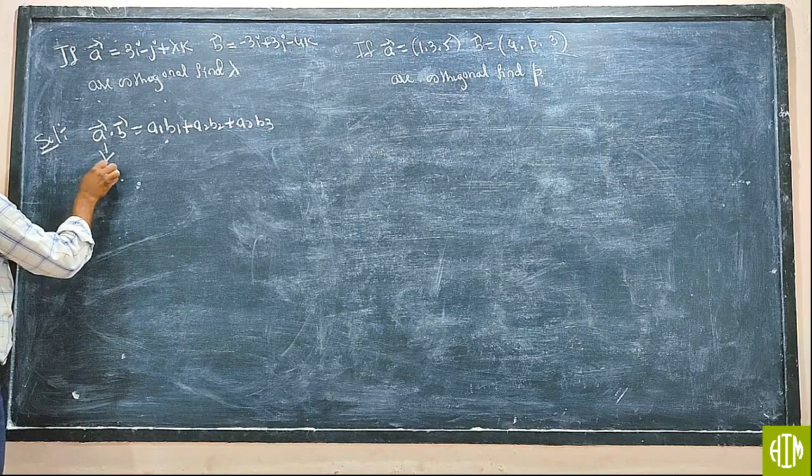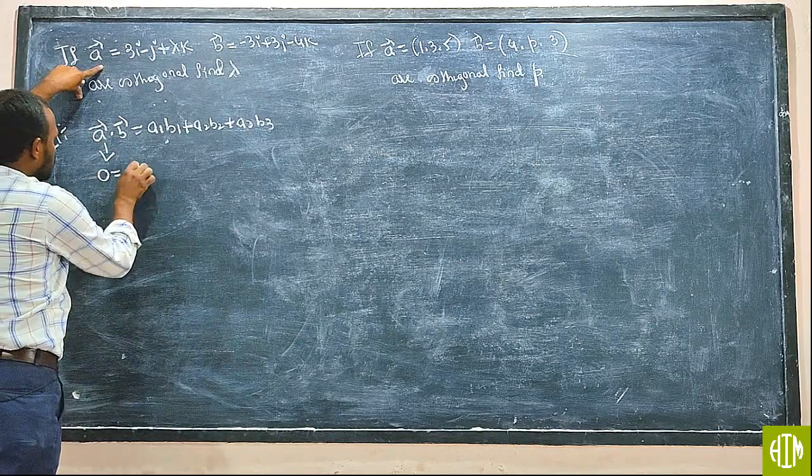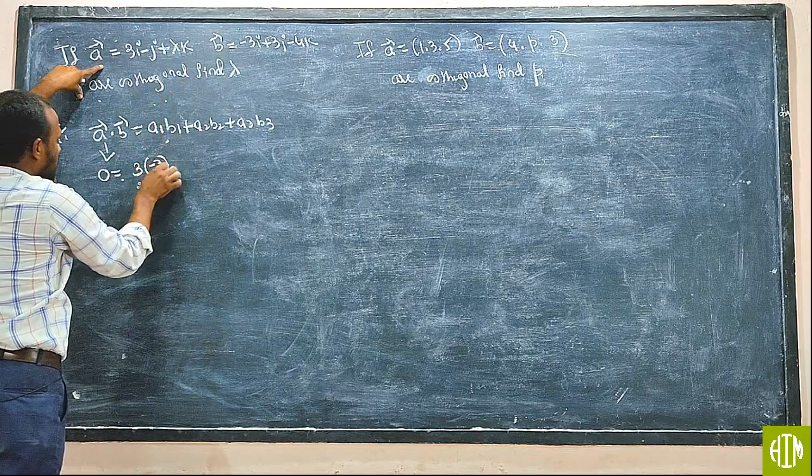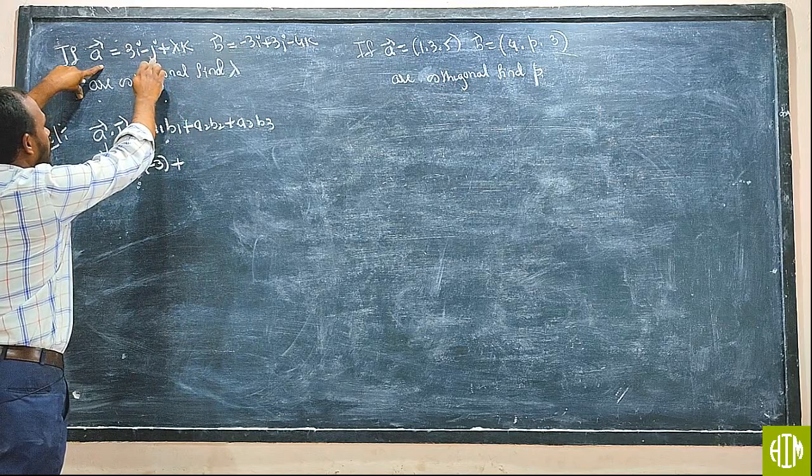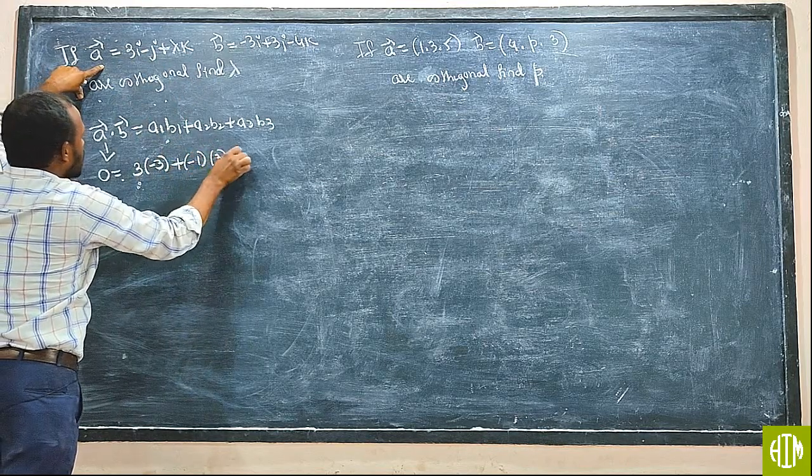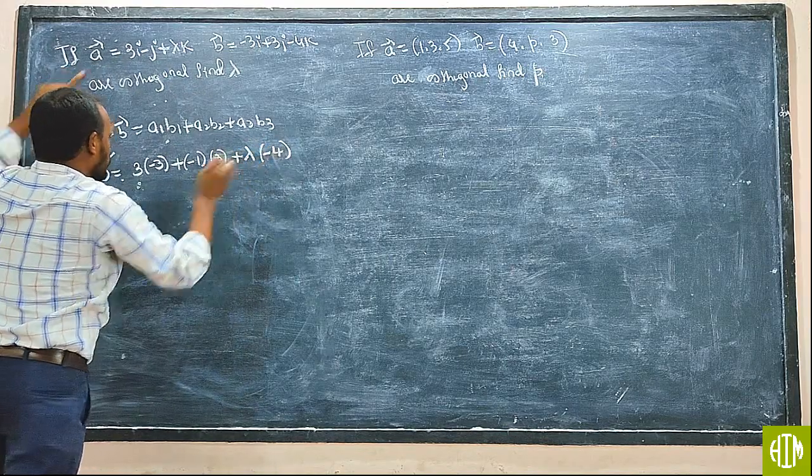V2 equals 0. A value: 3. B value: minus 3. J value: minus 1. J value: 3. K value: lambda. K value: minus 4.